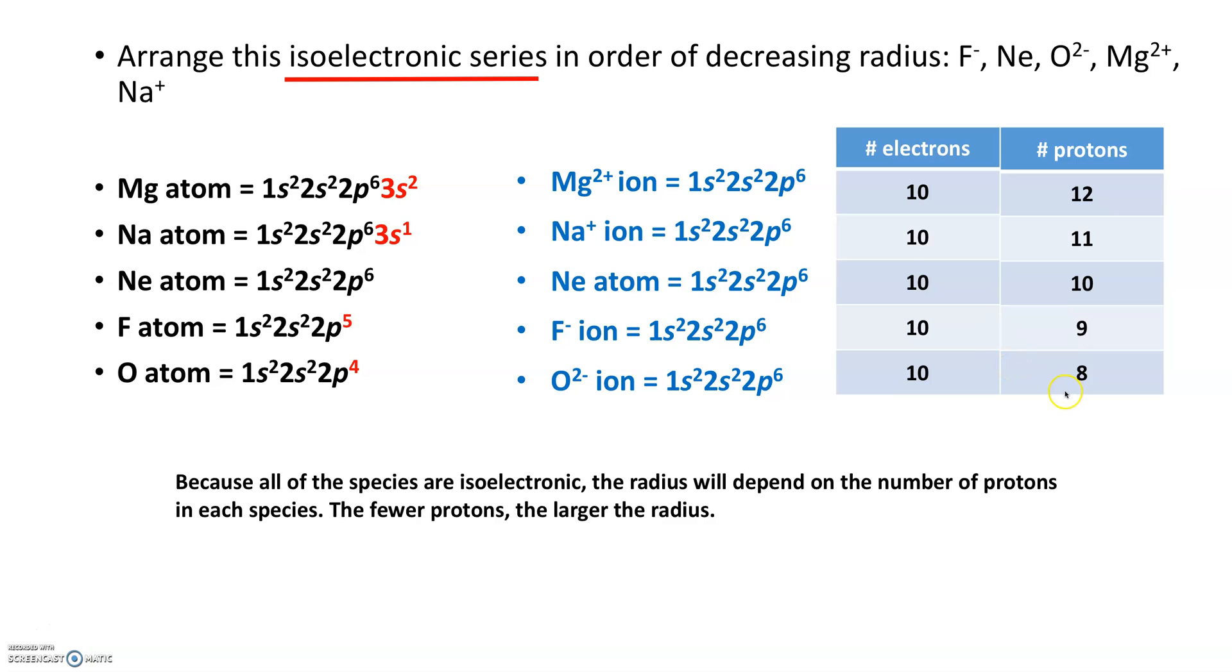So the key here—and a lot of students make a mistake—is decreasing radius. I want to go from the biggest to the smallest because decreasing means as I go left to right I'm going to have the smallest. So the smallest species should go here, and that's my magnesium ion. Why? 12 protons, only 10 electrons.